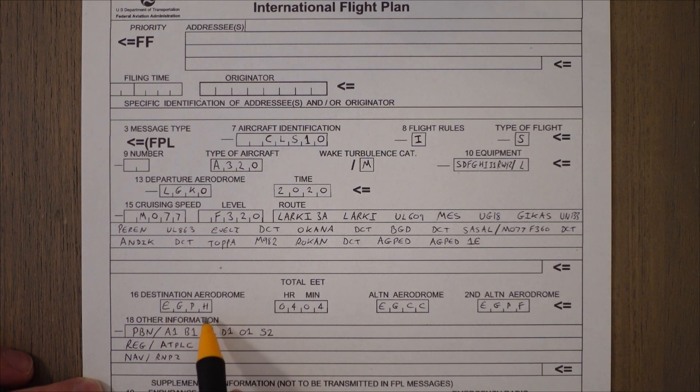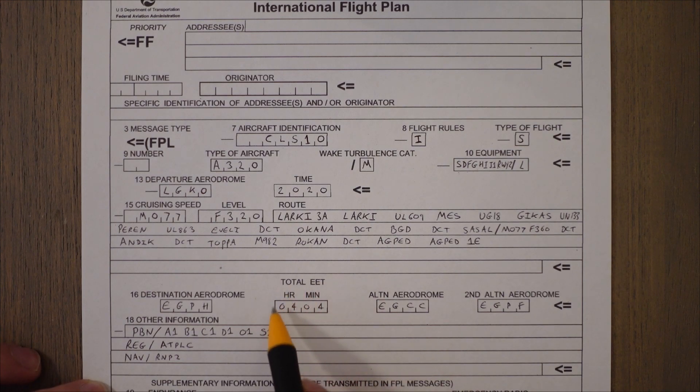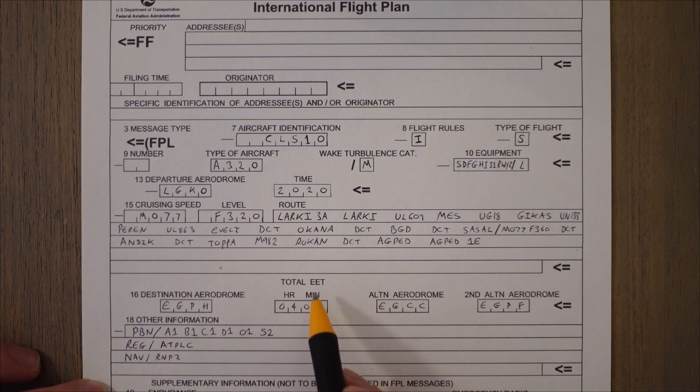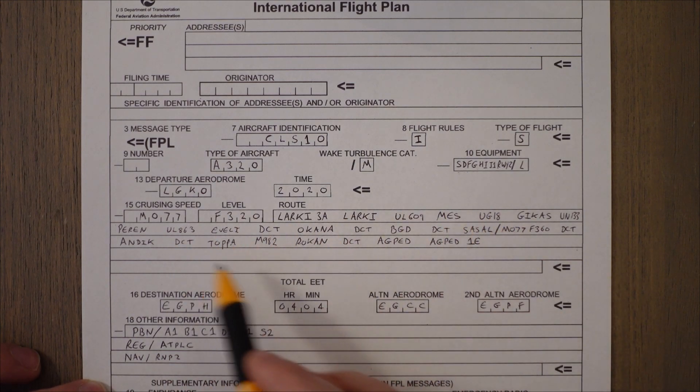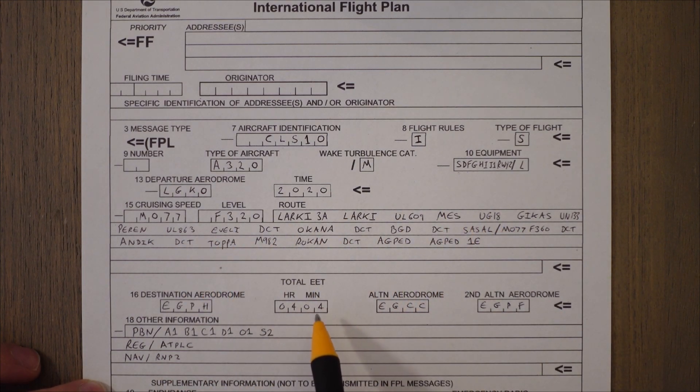And instead of putting our estimated time of arrival in here we put our total elapsed en route time EET. Basically the amount of time we're going to be flying for. So we estimate that that route is going to take us four hours and four minutes. And we do that instead of a standard arrival time because if we're delayed by 10 minutes then they can add the four hours and four on and get a more accurate time of our arrival.